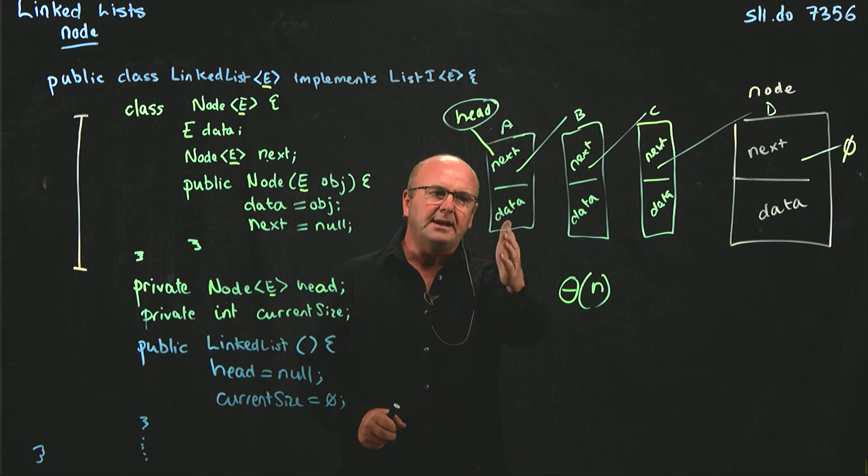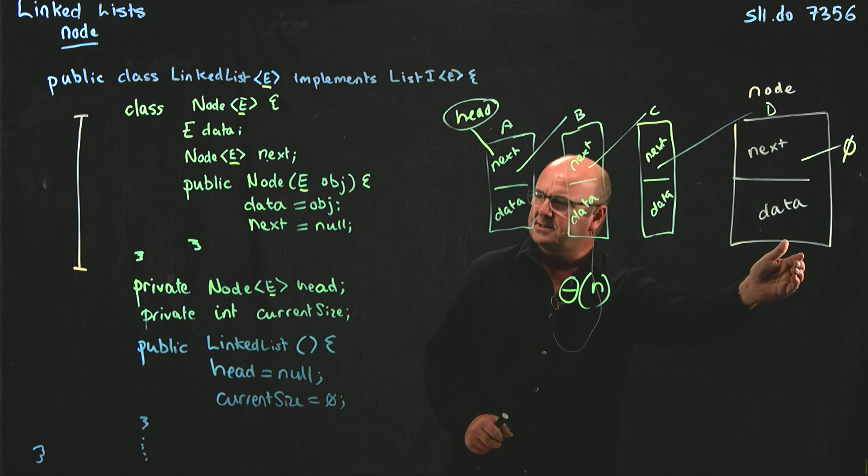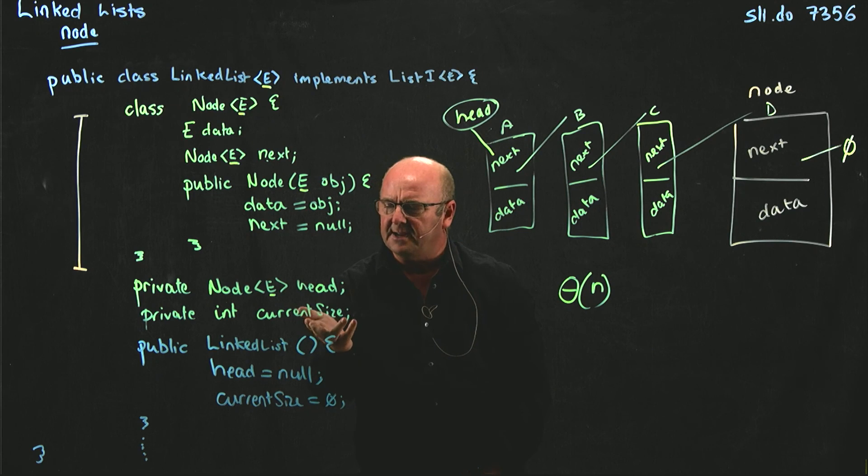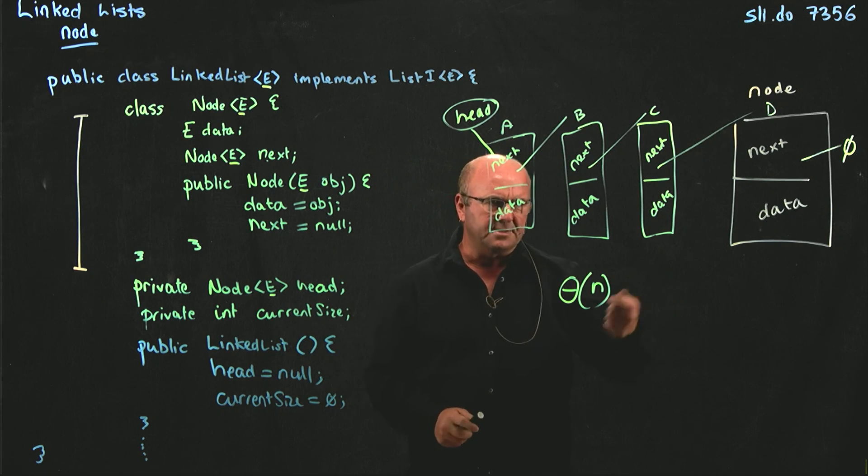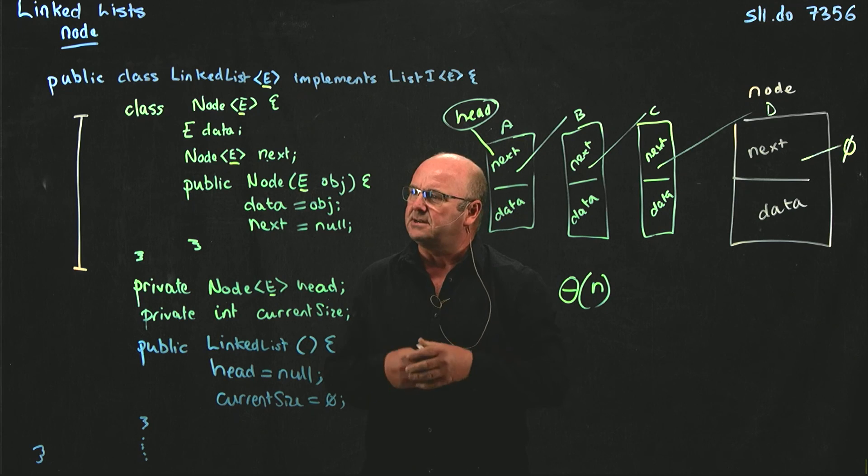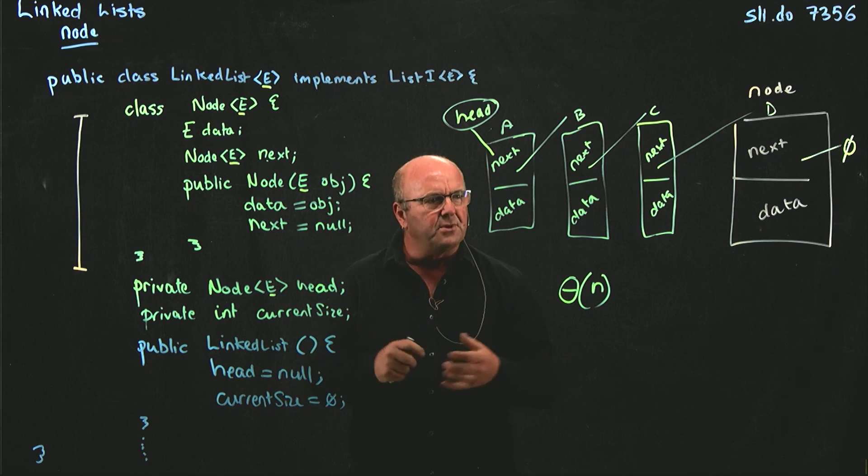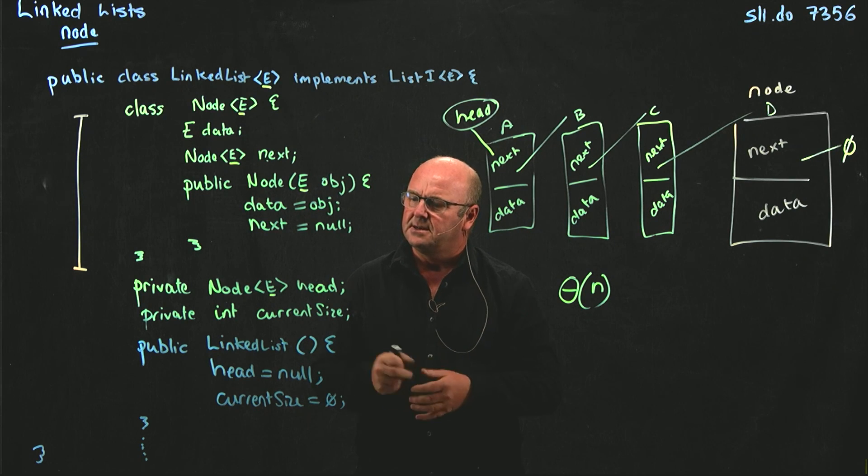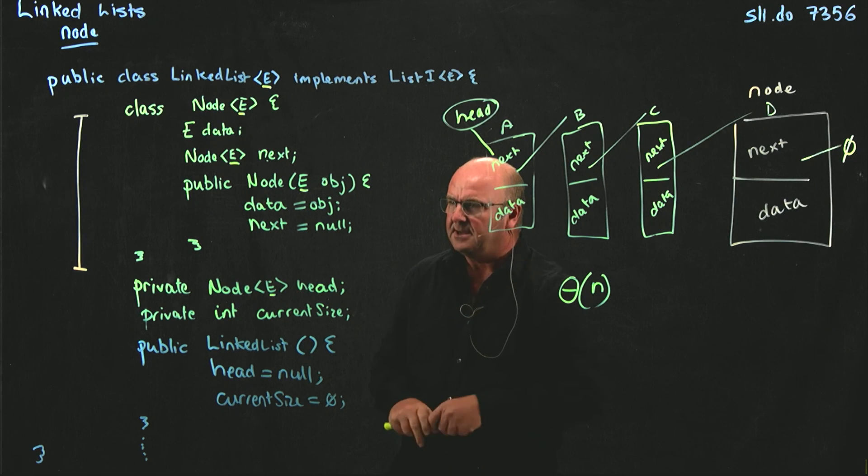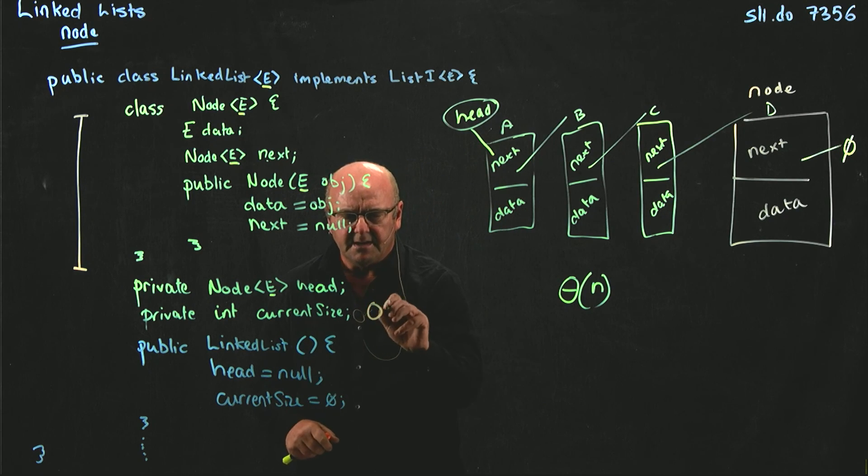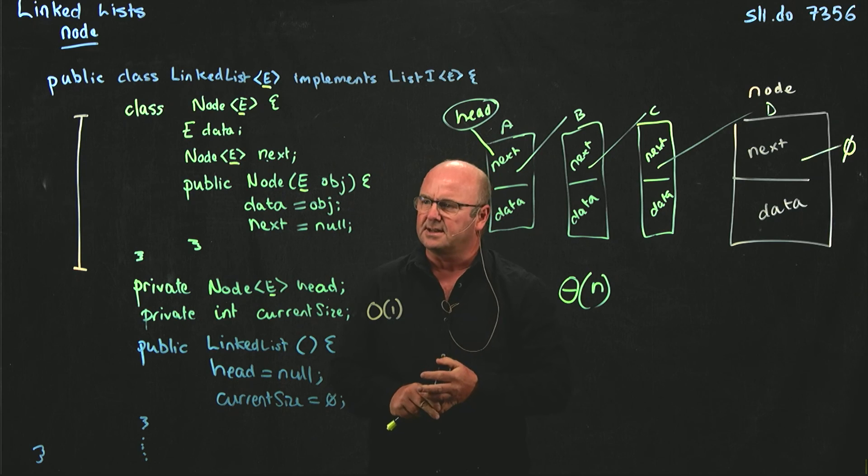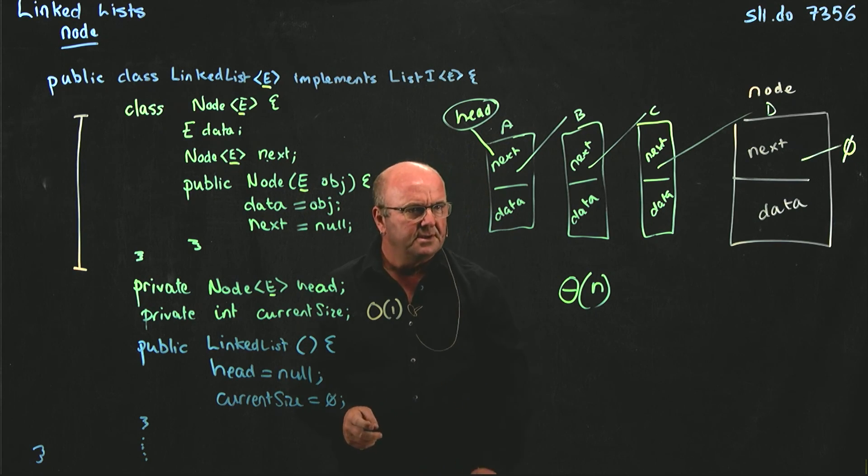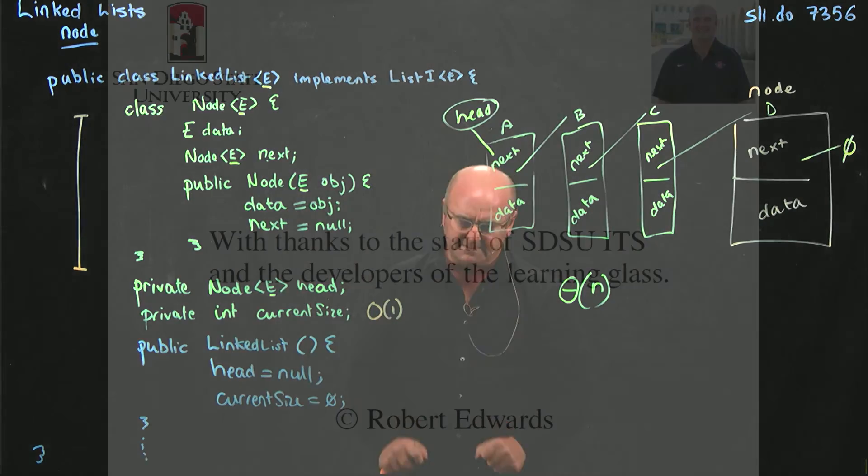So I can do it the slow way. I can count every element. That's complexity theta of n. Or I can do it the fast way. I can keep a current size. When I'm adding an element, incrementing a pointer is not going to add any more work relative to the amount of work I've done to actually create the node and add it to my linked list, right? So my current size pointer here basically gives me constant time access to the size of the linked list. And that's something that we always want to have. If we can do, if we can be slow or we can be fast, let's be fast.